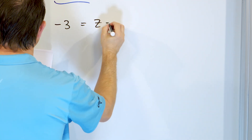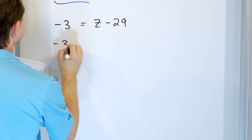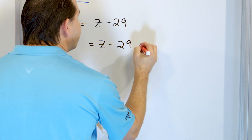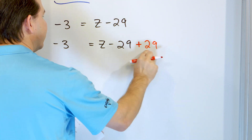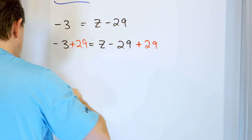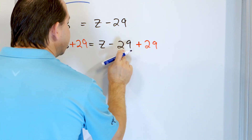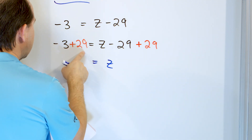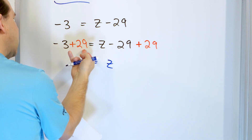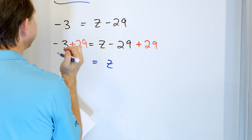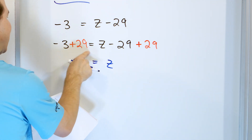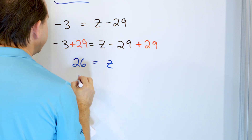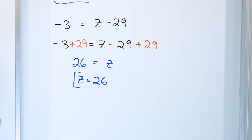Problem 8: negative 3 equals z minus 29. We're subtracting 29, so we undo that by adding 29 to both sides. On the right-hand side, negative 29 plus positive 29 is zero, leaving just z. And then negative 3 plus 29 — we can flip that around to make it like 29 minus 3, which is 26. The sign goes with the larger absolute value, which is positive, so z equals positive 26.